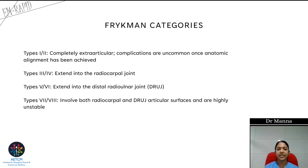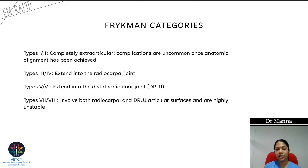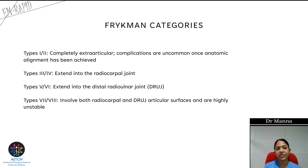There is the Frykman classification to categorize these fractures. Colles' fracture is an extra-articular fracture; if completely extra-articular, complications are fewer and anatomical alignment can be achieved. In Frykman class 3 and 4, the fracture extends to the radiocarpal joint — intra-articular involvement causing instability. In type 5 and 6, it extends into the distal radio-ulnar joint, which is also unstable. In type 7 and 8, it involves both the radiocarpal and distal radio-ulnar joints — a highly unstable fracture pattern.